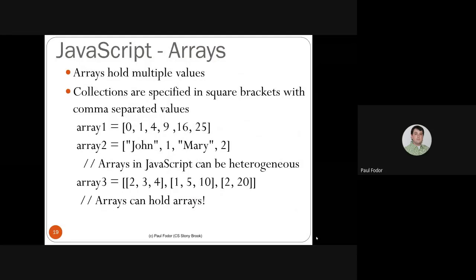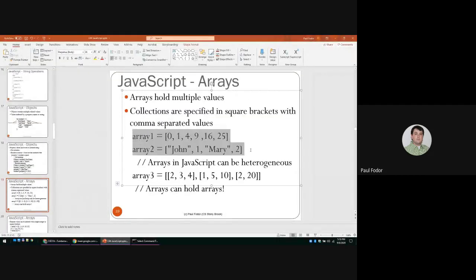Arrays are collections and sequences of specified values in square brackets with comma-separated values. For instance, 'array1 = [0, 1, 4, 9, 16, 25]'. Arrays in JavaScript can be heterogeneous — 'array2 = ["John", 1, "Mary", 2]' mixing strings and numbers — which is allowed unlike Java, where everything must be the same type. Arrays can also hold other arrays or mix arrays, numbers, and strings. These are all correct definitions of arrays in JavaScript.